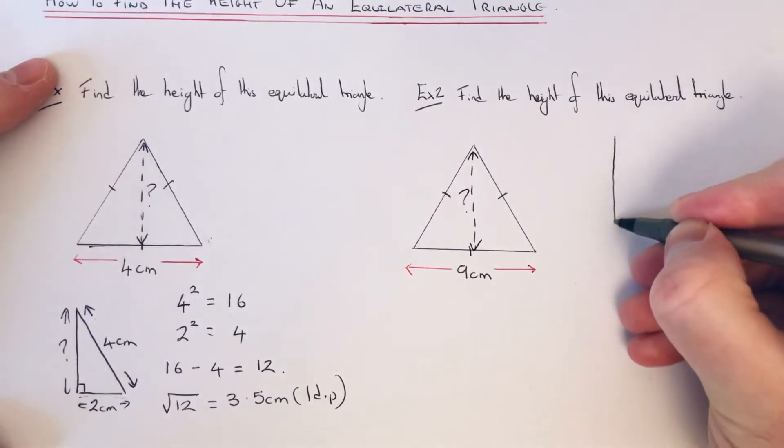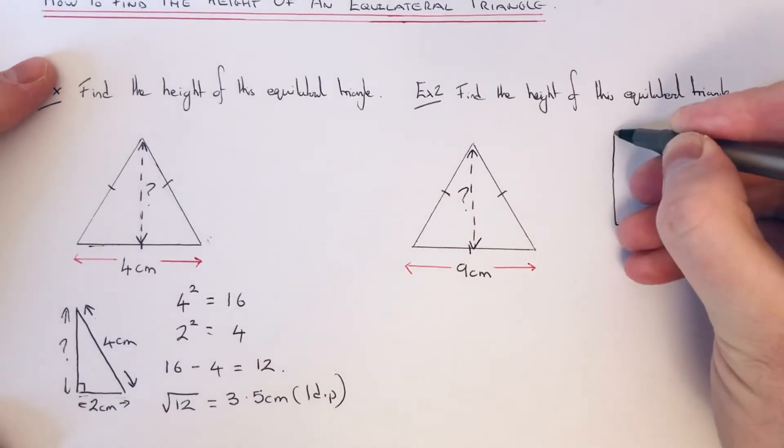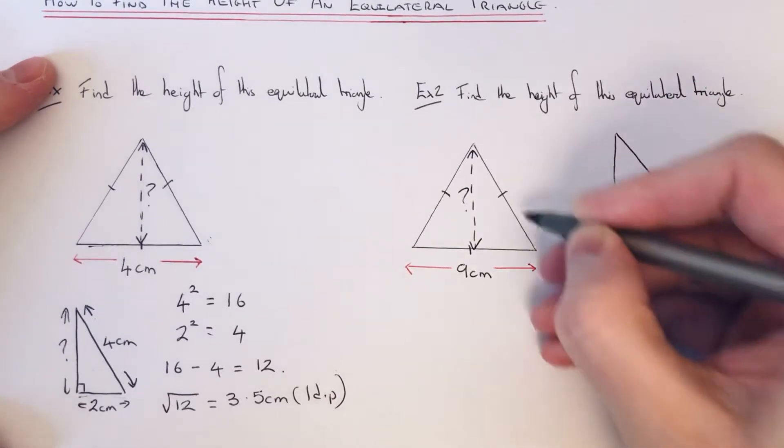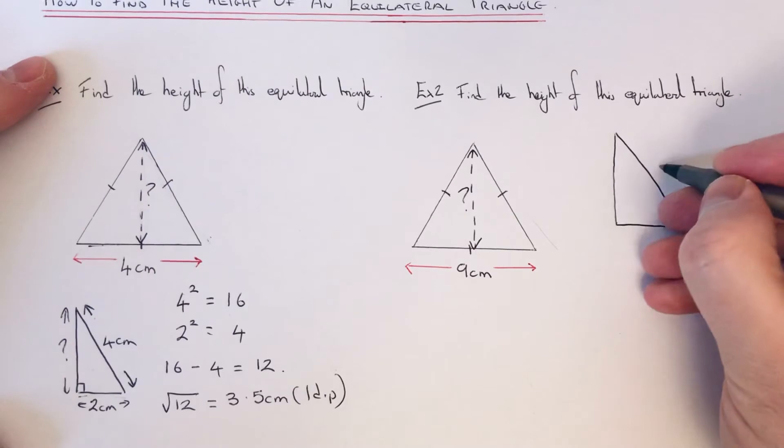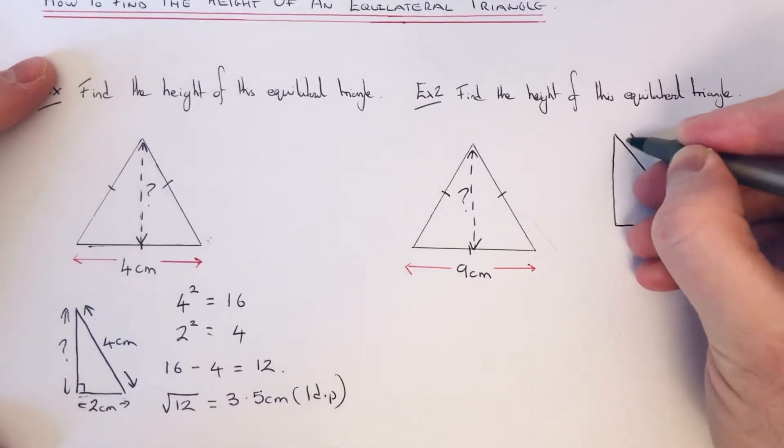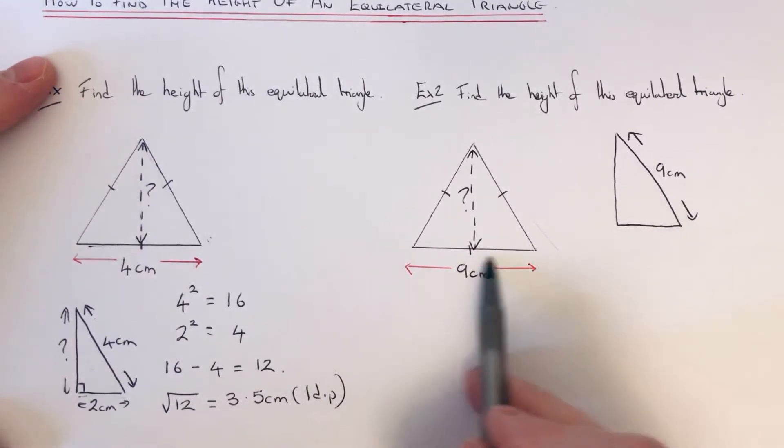So this length here is nine. Okay, so we've halved the length along the bottom so this one is 4.5, that's half of nine.